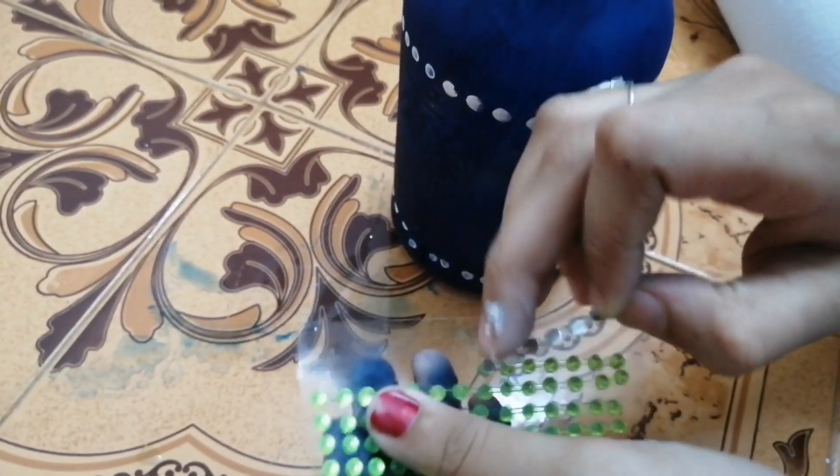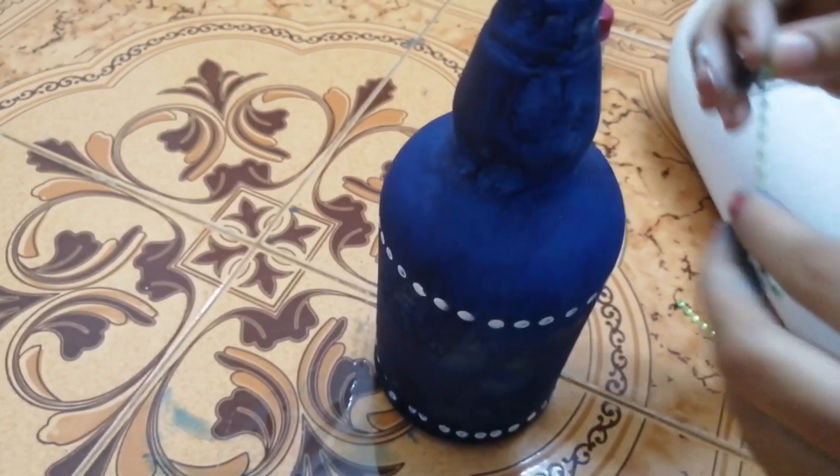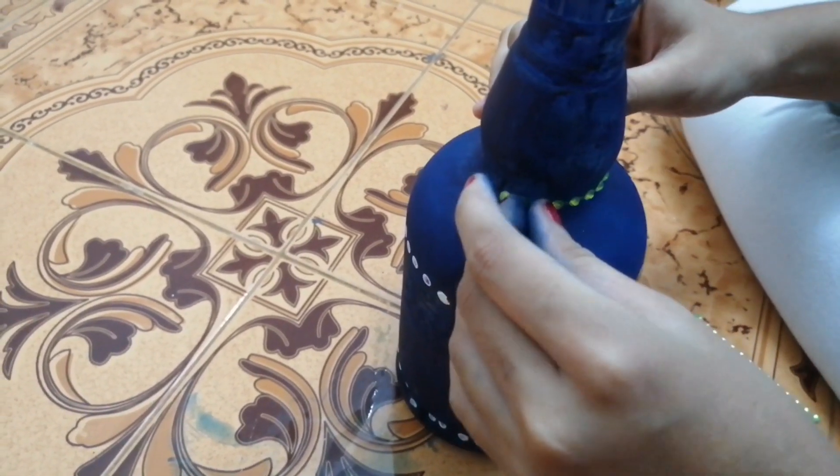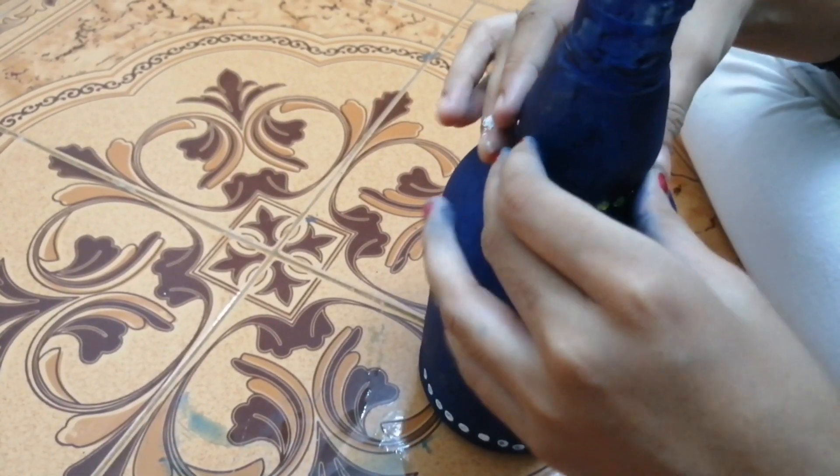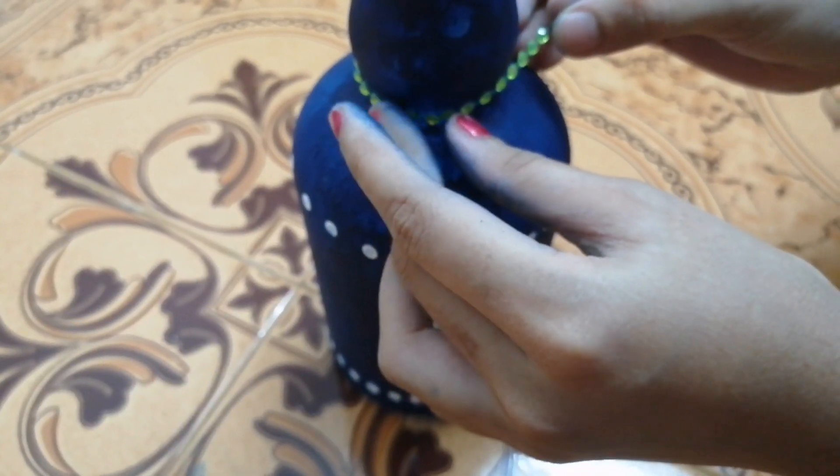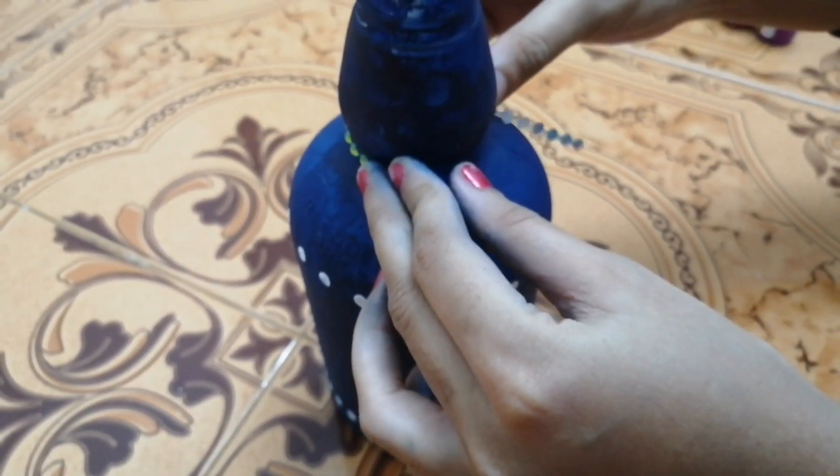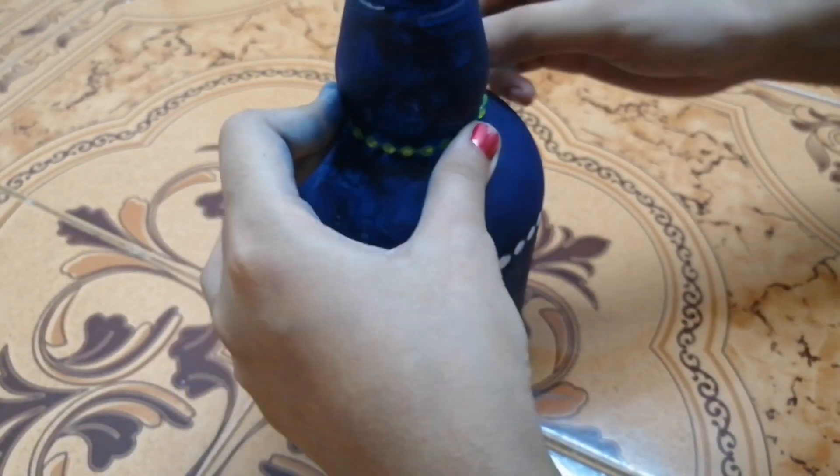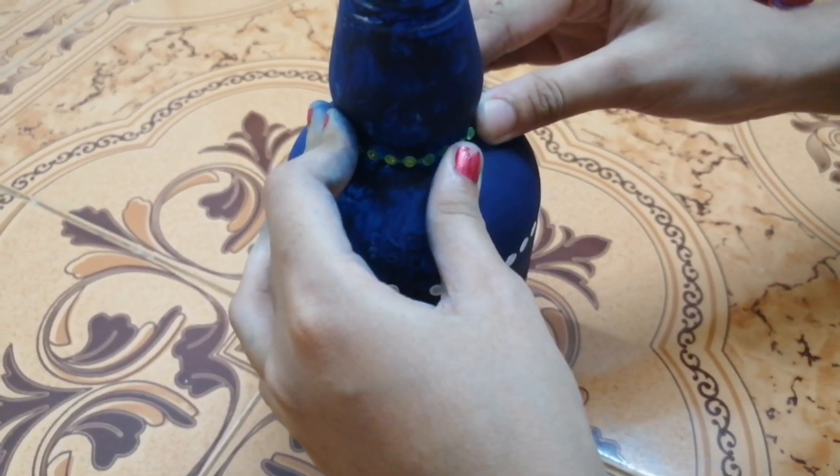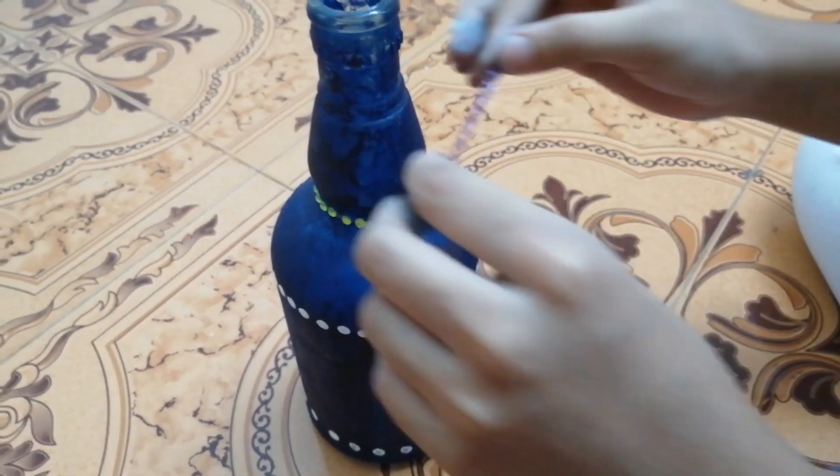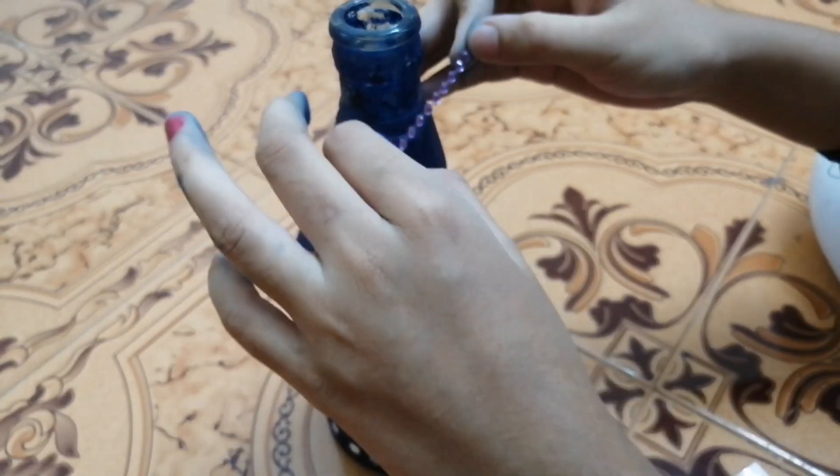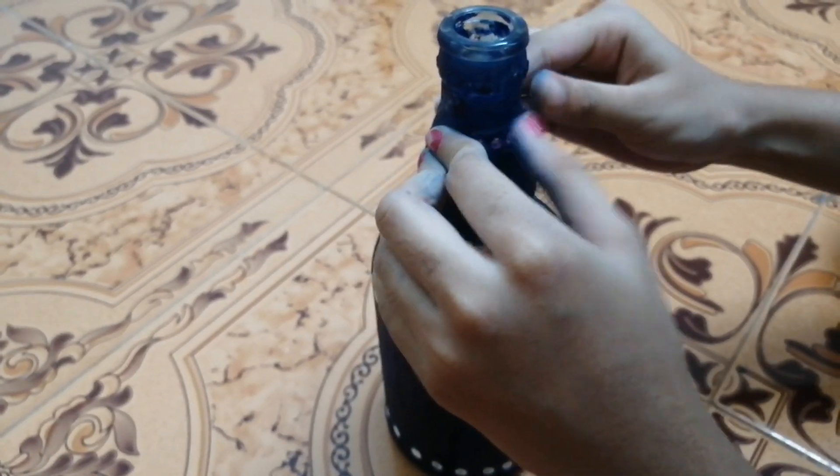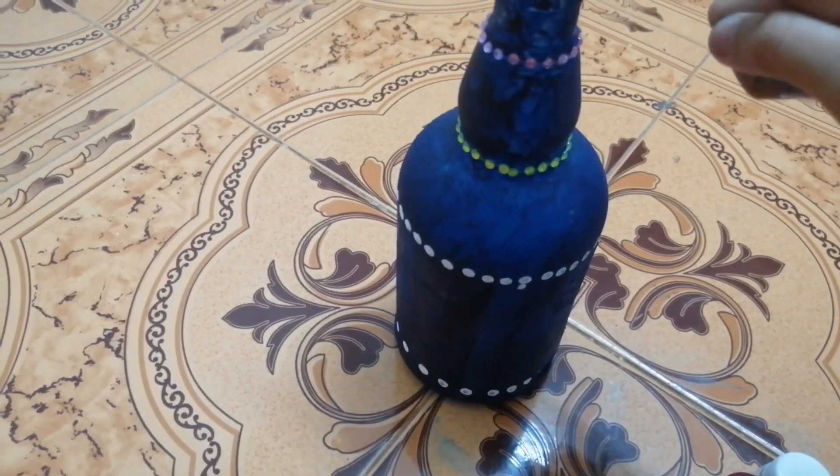We have to take the stones and stick them in the neck portion of the bottle. Then I am taking another color stone and sticking it over here. Now I completed.